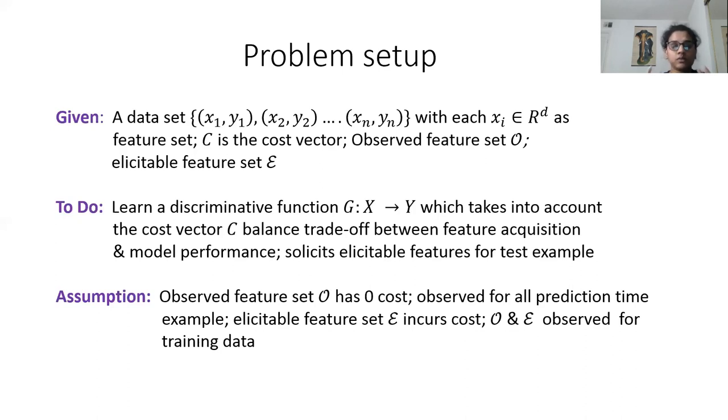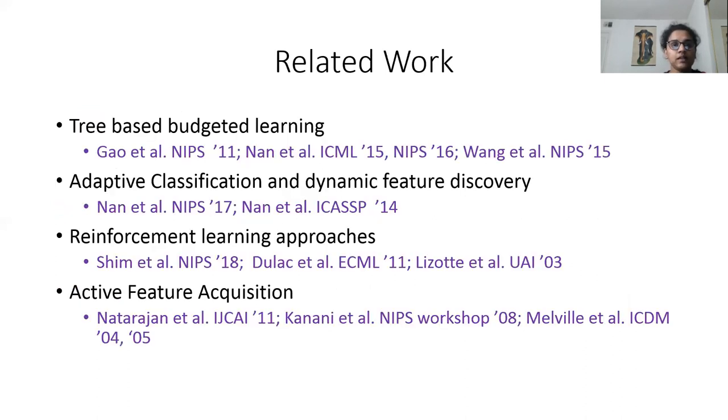These are some works that have been done regarding test-time feature elicitation. A lot of work has been done on tree-based budgeted learning, where based on various tree models the important elicitable features are identified.